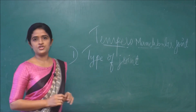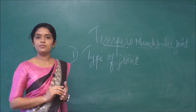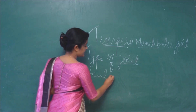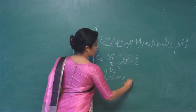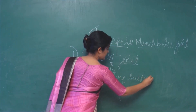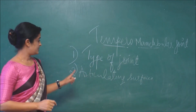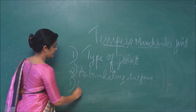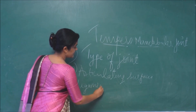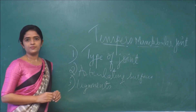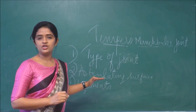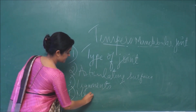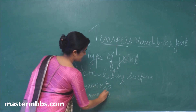First, you need to state the type of joint. Second, the articulating surfaces involved. Third, and most importantly, the ligaments involved. Fourth, the movements occurring at this joint. These four headings form the core structure for discussing any synovial joint.